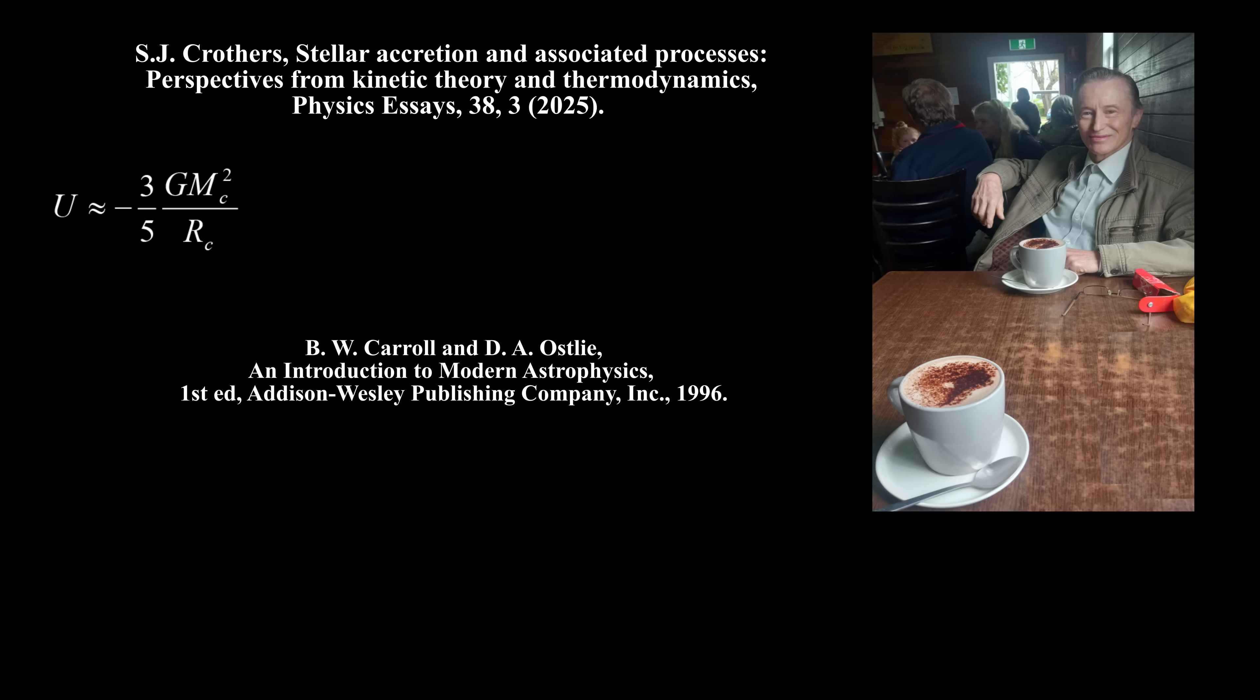Consider this equation for what Carroll and Ostlie call on page 448 of their book the gravitational potential energy of a spherical gas cloud of constant density. They then invoke this equation for the total kinetic energy of n ideal gas particles. Using the Virial Theorem, they combine these two equations to calculate the condition for their gas cloud to gravitationally collapse, in other words, to compress itself, at their equation 12.5.